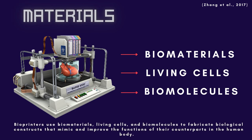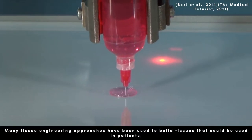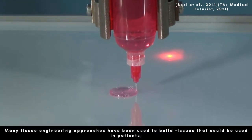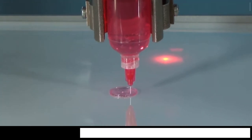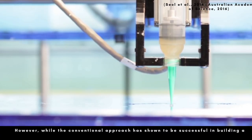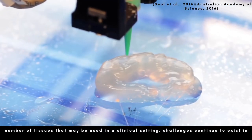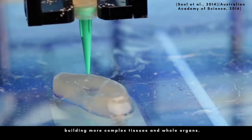Bioprinters use biomaterials, living cells, and biomolecules to fabricate biological constructs that mimic and improve the functions of their counterparts in the human body. Many tissue engineering approaches have been used to build tissues that could be used in patients, including skin, bone, and blood vessels. However, while the conventional approach has been shown to be successful in building a number of tissues that may be used in a clinical setting, challenges continue to exist in building more complex tissues.